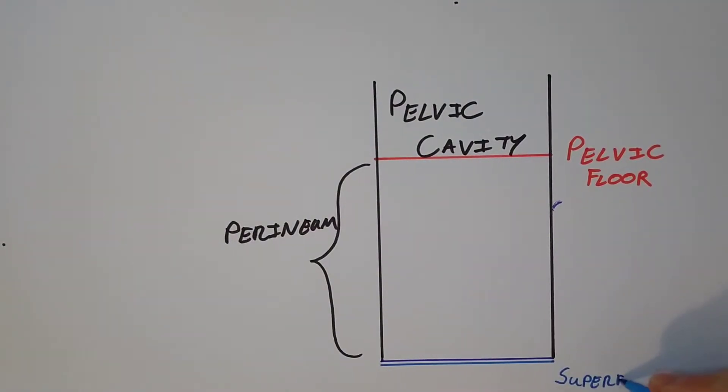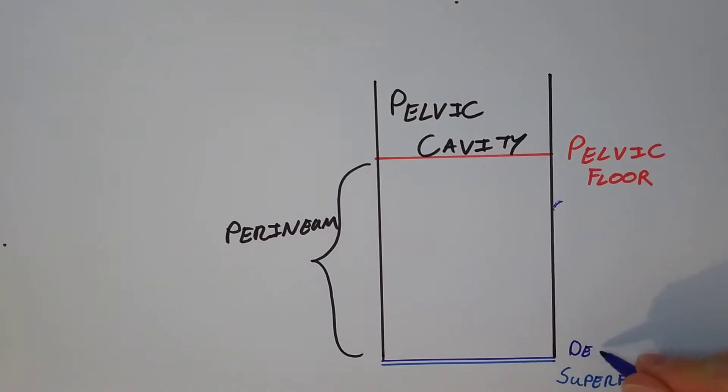The superficial layer is typically fatty, and the deep layer is membranous and sometimes known as Colles fascia.